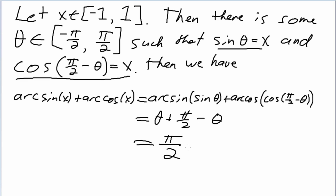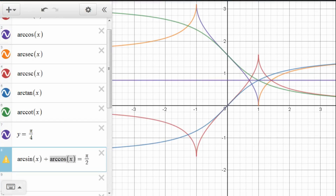And so we see that the fact that arcsine of x plus arccosine of x is equal to pi over 2 is simply a corollary of the fact that sine and cosine are co-functions, and that the same goes for the other two pairs of functions.